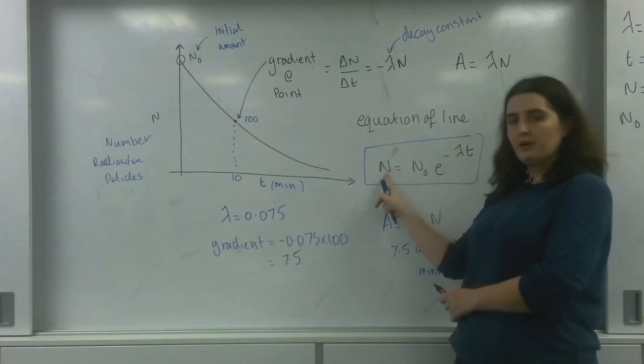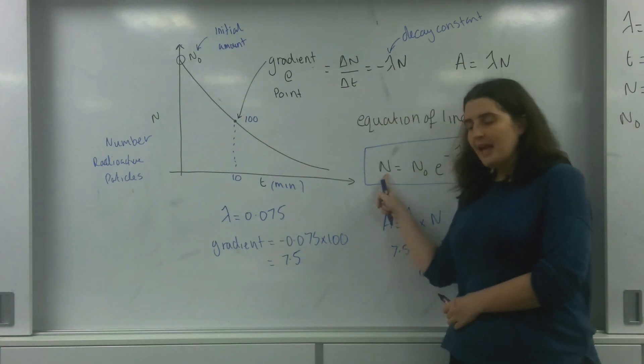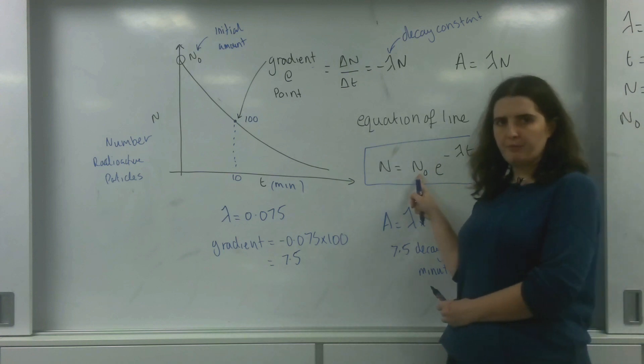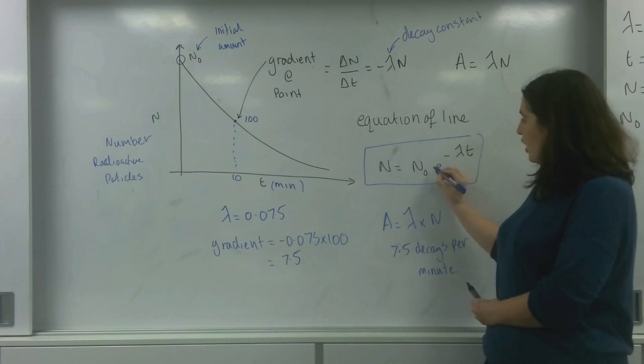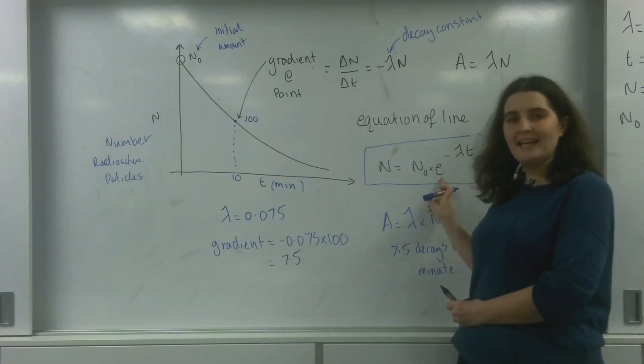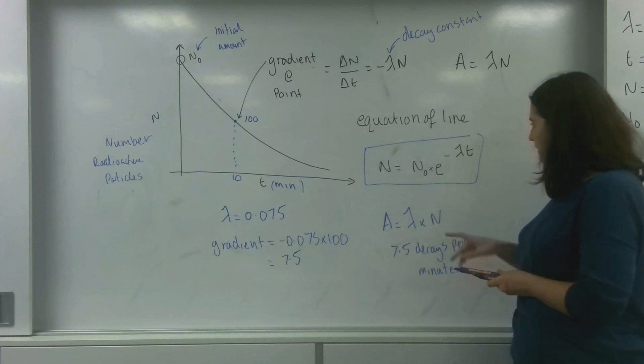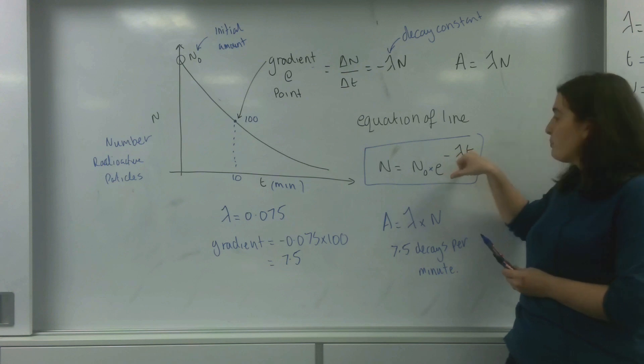That the number of particles at any point is the initial number of particles times by this letter here, E or exponential, to the power of the decay constant times by the time.